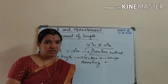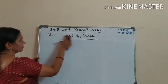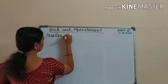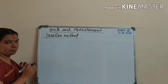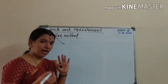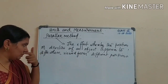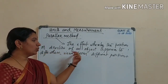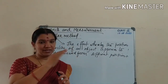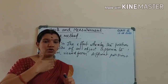Now we will move to the parallax method. Before explaining the method, you must know what parallax is. Parallax means the effect whereby the position or direction of an object appears to differ when viewed from different positions. For example, if you want to measure the distance from your position to a tree, that is where the parallax concept applies.